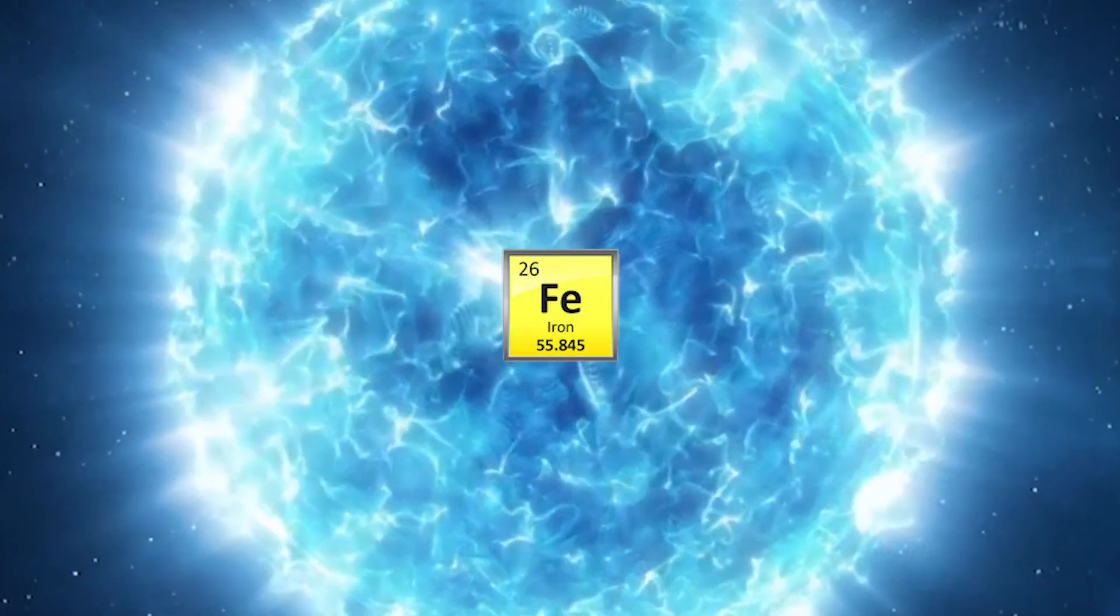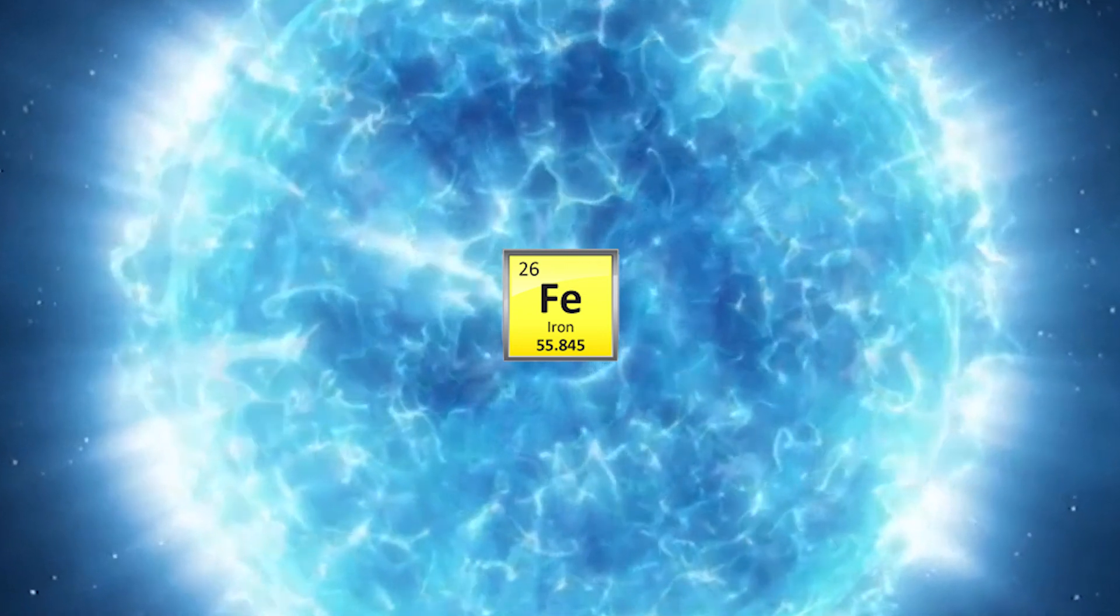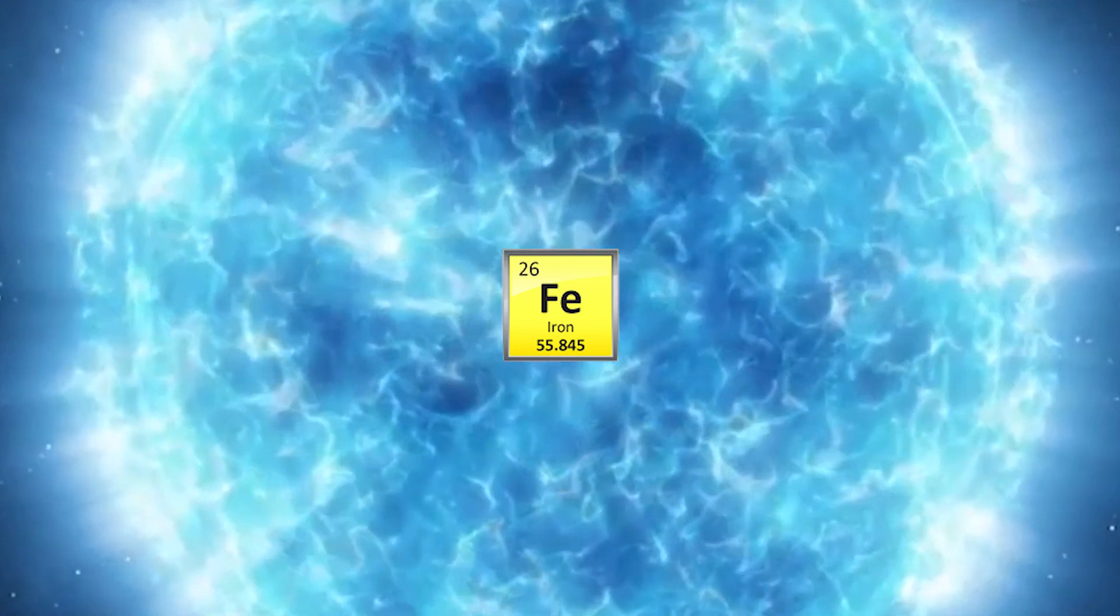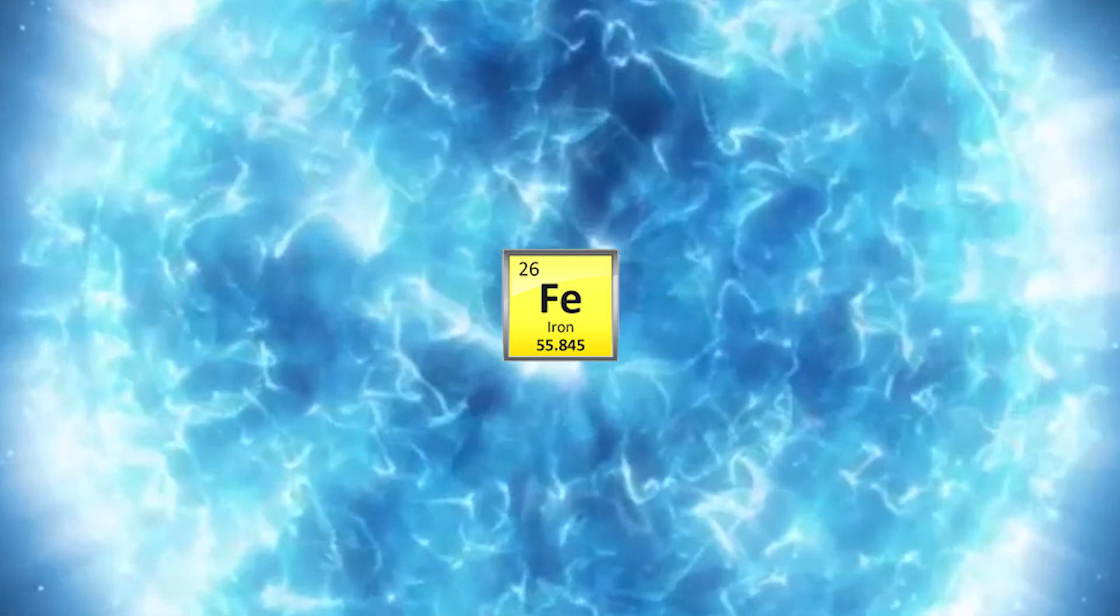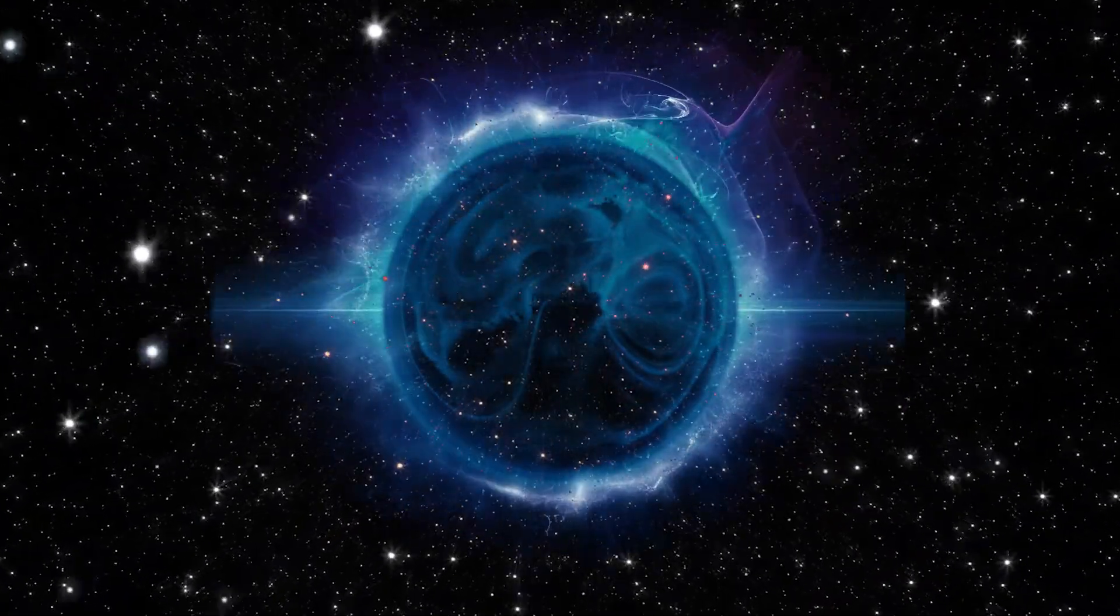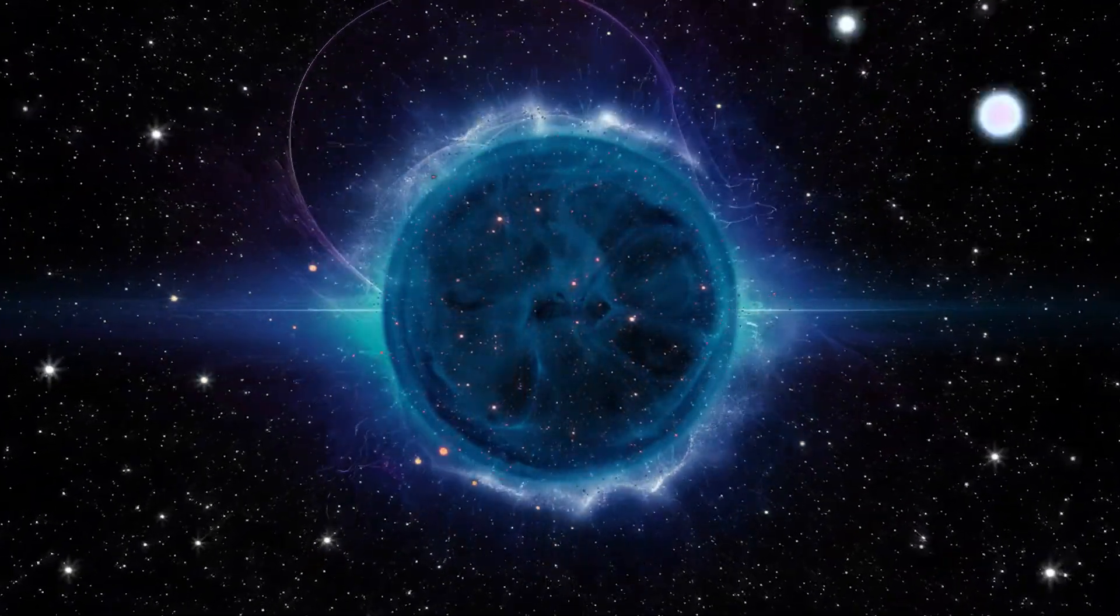But once it reaches iron, it's the end of the process, because the fusion of iron atoms requires more energy than it produces, so the star implodes when it reaches this stage. It takes collisions of super dense neutron stars to form the rest of the elements.